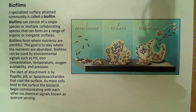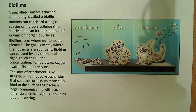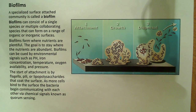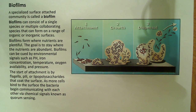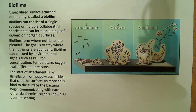These biofilms can be cued to start forming by environmental signals. Some of those environmental signals might be iron concentrations, pH, temperature, oxygen availability, pressure — all different types of environmental triggers that can trigger the formation of a biofilm.